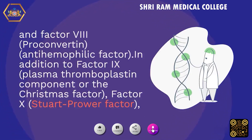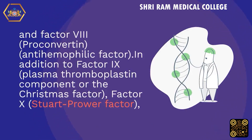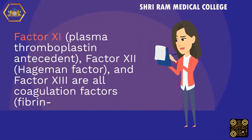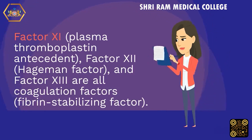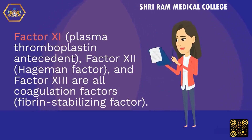In addition, Factor IX is the plasma thromboplastin component or the Christmas factor. Factor X is the Stuart-Prower factor. Factor XI is the plasma thromboplastin antecedent. Factor XII is the Hageman factor. And Factor XIII is the fibrin stabilizing factor.